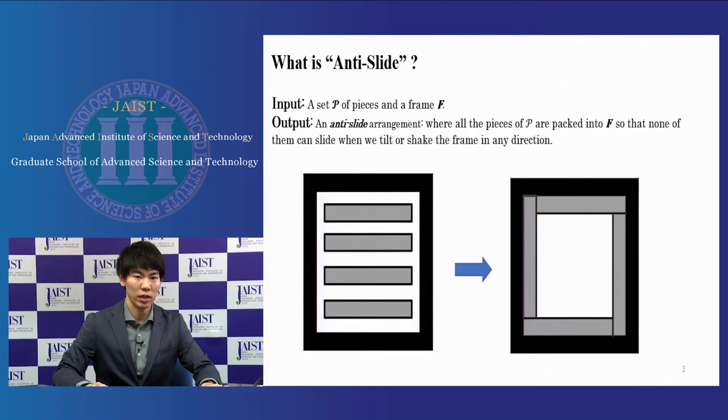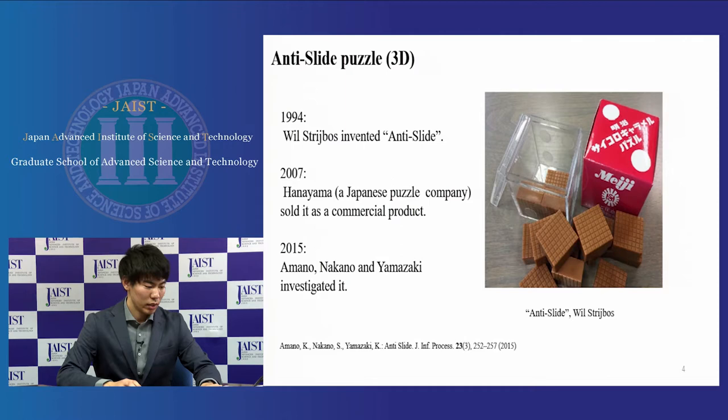This is the history of anti-slide puzzles. In 1994, Will Stribos, who is a Dutch puzzle designer, invented his idea of anti-slide puzzles. In 2007, it was sold as a commercial product by Hanayama, a Japanese puzzle company. In 2015, Amano et al. investigated this puzzle.